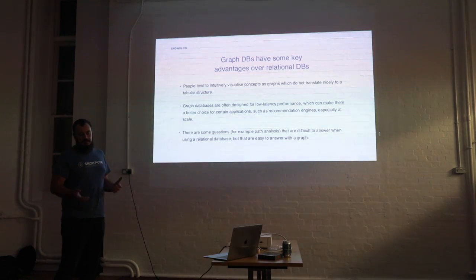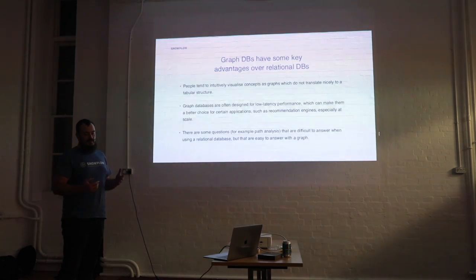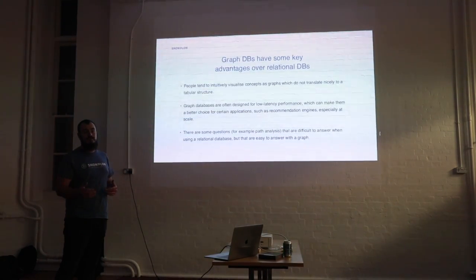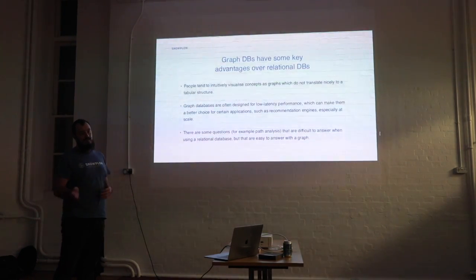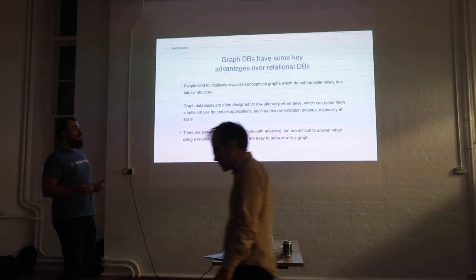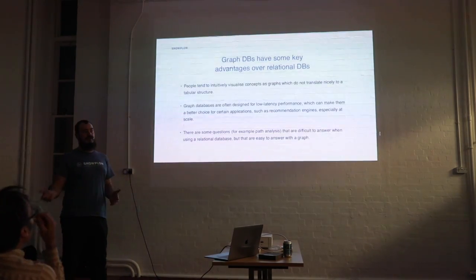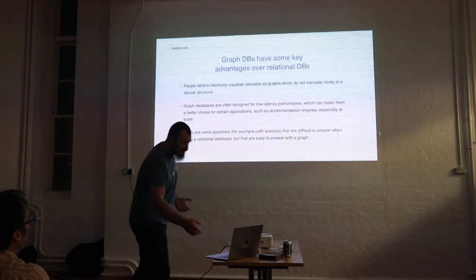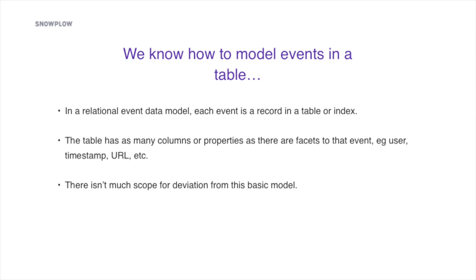There are also pragmatic reasons. Graph databases are designed for low latency performance, making them better suited for applications like recommendation agents where you need a very quick response to feed back into some process — much better suited than relational databases. There are also questions when analyzing data that are very hard to answer if your data is not in the form of a graph.